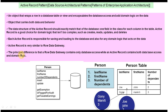The principal difference is that Row Data Gateway contains only database access, while Active Record contains both database access and domain logic. As per the Row Data Gateway pattern, the person class and its objects will contain only data plus database access — no domain logic. But Active Record contains data, database access, plus domain logic that acts on the data.